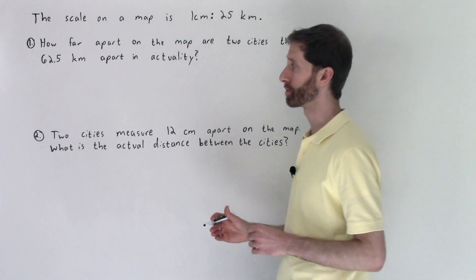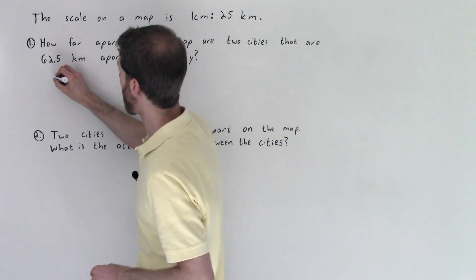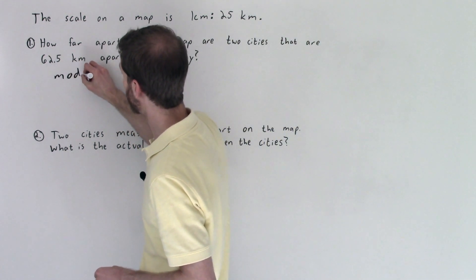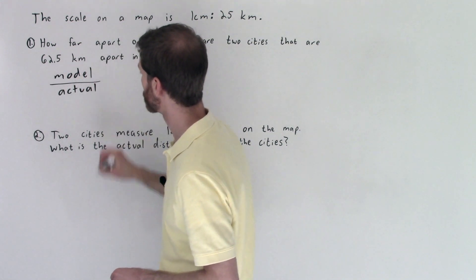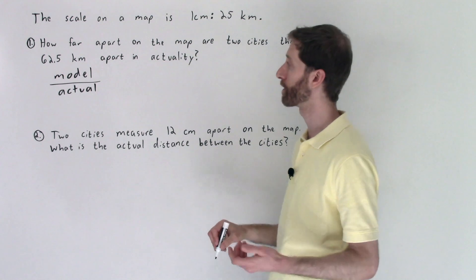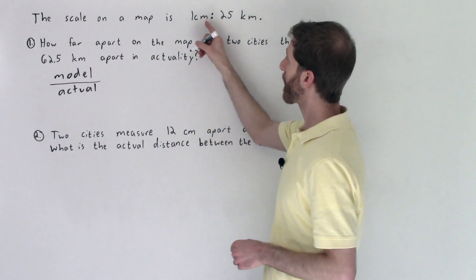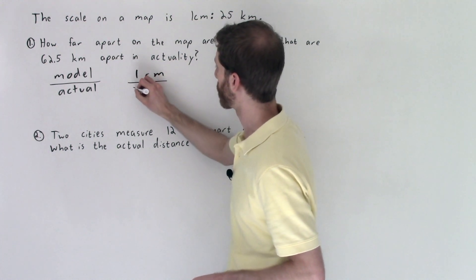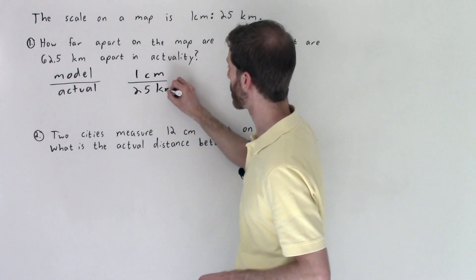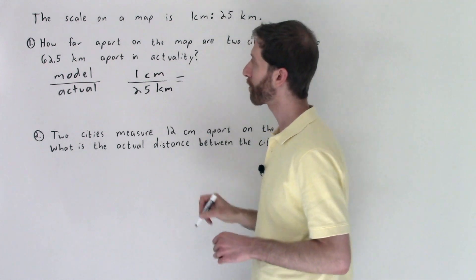When we do scale problems, the scale is the model or drawing compared to the actual distance or amount. So model to actual is what we're keeping in our head. So we're going to use that. The model is one centimeter compared to 25 kilometers. That is the ratio that we're using.